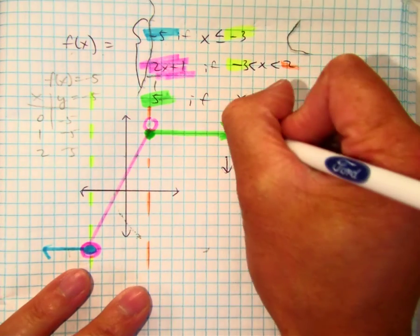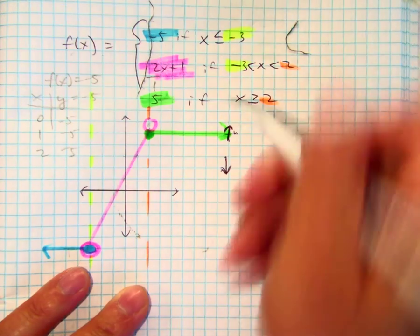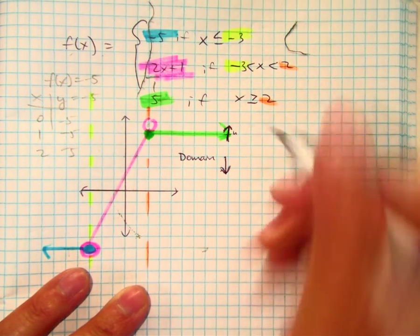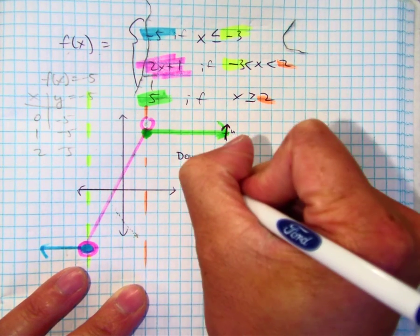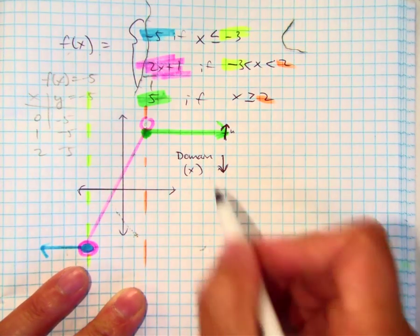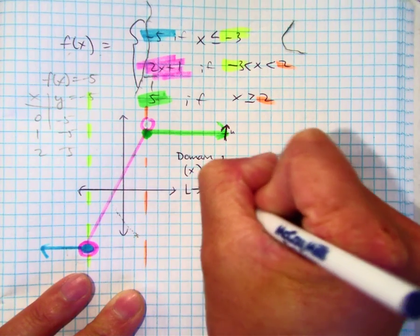So yesterday we learned about increasing and decreasing. The big idea for increasing and decreasing is you're focusing on the domain. What are you focusing on, Klaus? Domain. The domain for which axis? You're looking only at the x values. When you're looking at your x values, which direction do you go, Klaus? Left to right. Left to right.